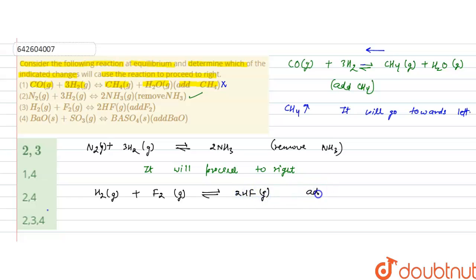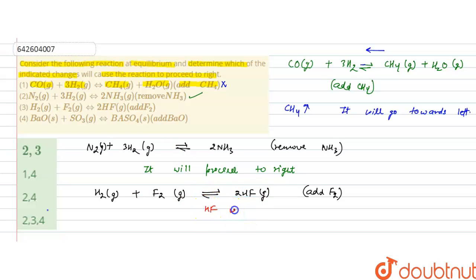The indicated change is to add F₂, that is fluorine gas. If fluorine gas is added to this equilibrium, it will drive the forward reaction to form more HF. So HF will be formed more, meaning the reaction will proceed to right.